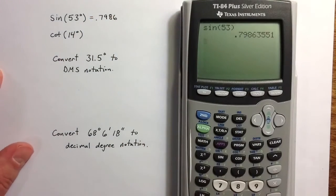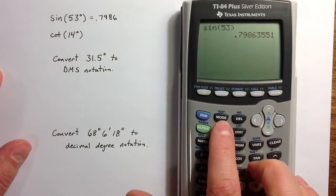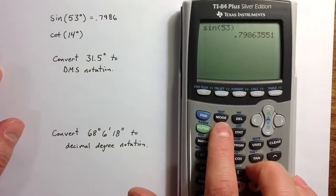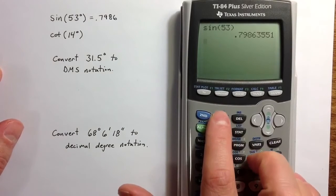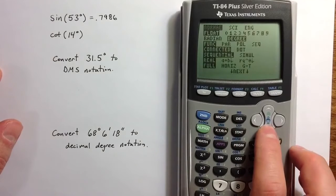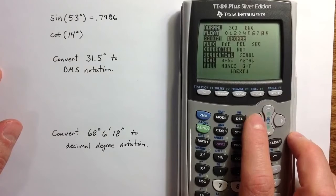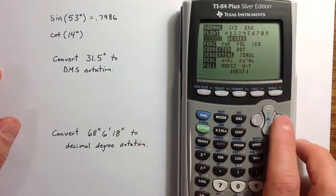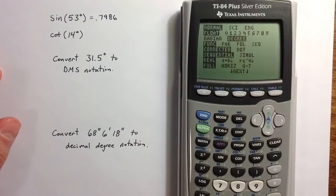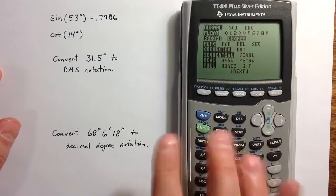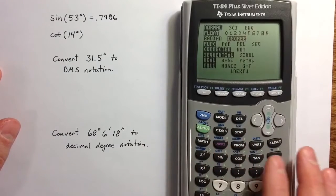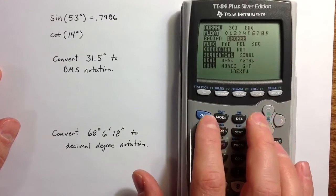We do need to be a little bit careful. There are two ways to measure angles, degrees and radians. The mode key allows us to change the calculator setting to be either in radians or degrees. We want to make sure we're in degree mode as we are. If we were in radian mode, we would have found the sine value for 53 radians.